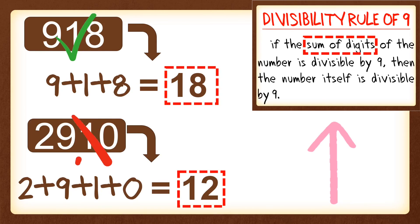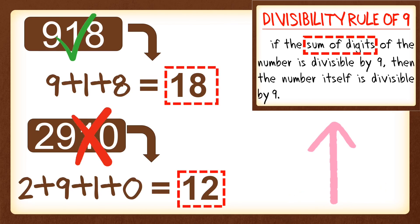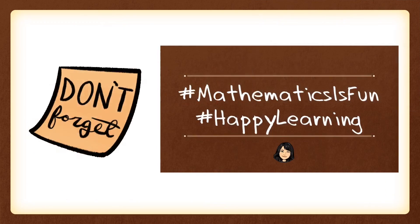A friendly reminder: to apply the divisibility rule of 9, just get the sum of the digits and determine if it is a multiple of or divisible by 9. If so, the number itself is divisible by 9; if not, the number is also not divisible by 9. Don't forget — happy learning, because it is fun!